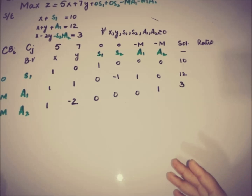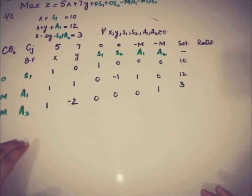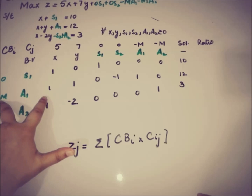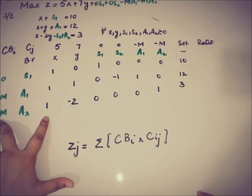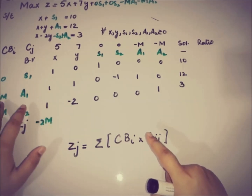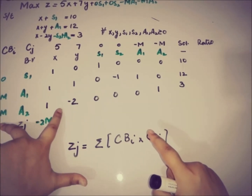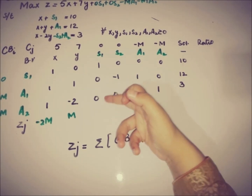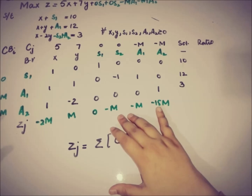The next step is finding ZJ. Recalling the formula: ZJ equals the summation of CBI multiplied by CIJ. So: 0×1 + (-M)×1 + (-M)×1 gives -2M. For the y column: 0×0 + (-M)×1 + (-M)×(-2) gives M. The ZJ row values are -2M, M, 0, 0, -M, -M, and -15M.